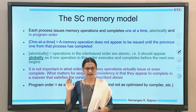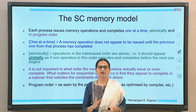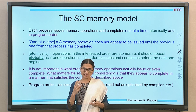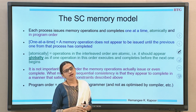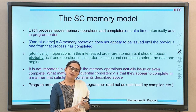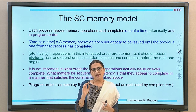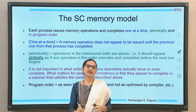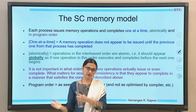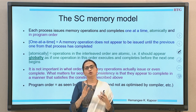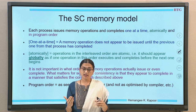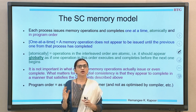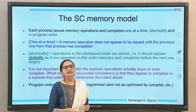To understand this further: each process issues memory operations and completes them one at a time, atomically, and in program order. If we do these three things we establish sequential consistency. One at a time means when one operation is done, the process does not issue the next until this one finishes. Suppose I have read a and then write b — I make sure read a finishes and only then write b takes place. I do them one by one, meaning I am not allowed to overlap operations.